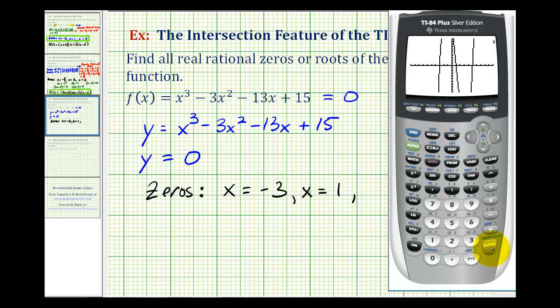We'll press enter three times. Enter, enter, enter. Our last zero is x equals five.